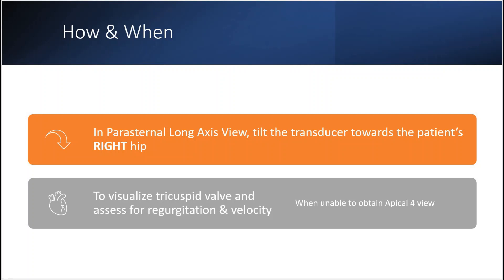To obtain the RV inflow view, first you get the parasternal long axis view and then you tilt the transducer towards the patient's right hip. The RV inflow view is indicated when you want to visualize the tricuspid valve and to assess for tricuspid regurgitation and its velocity. This is especially needed when one is unable to obtain an apical four view due to the patient having poor windows.